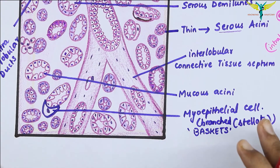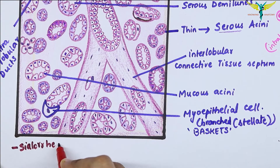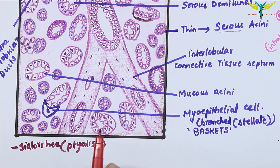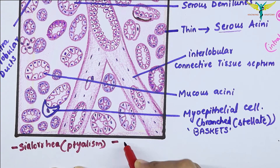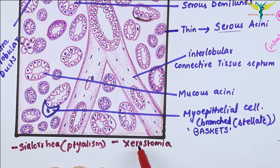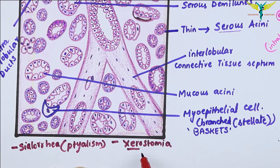Coming to the clinical correlations of salivary glands: sialorrhea, also called ptyalism, refers to an increase in the flow of saliva. The second condition is xerostomia — as the name indicates, decreased salivation is called xerostomia.